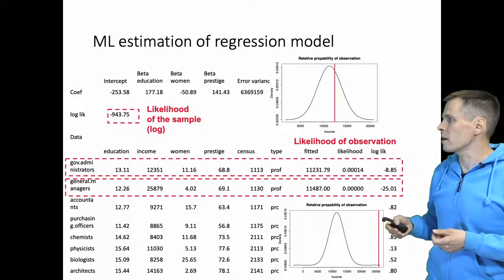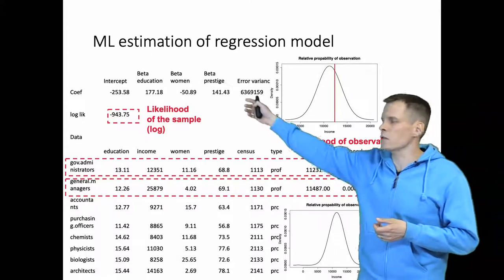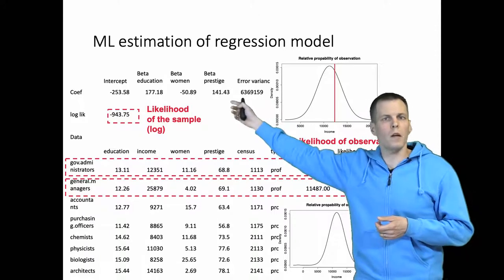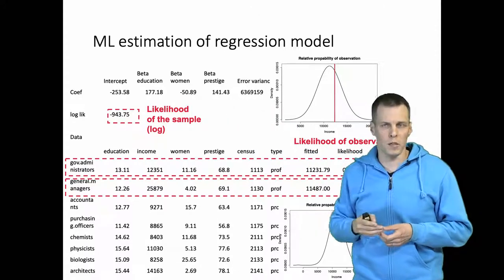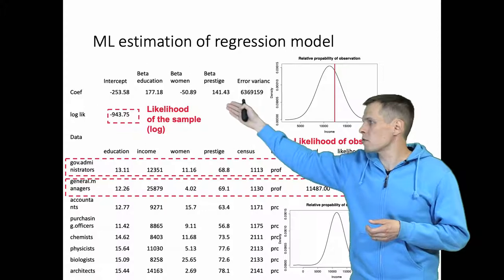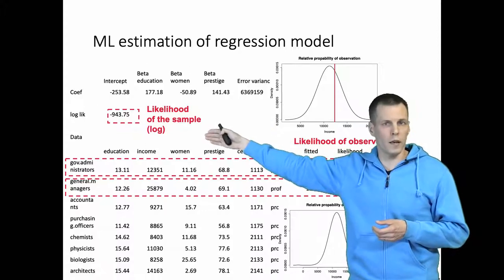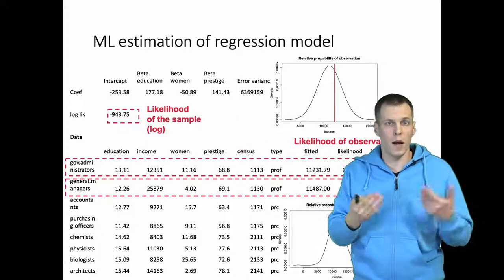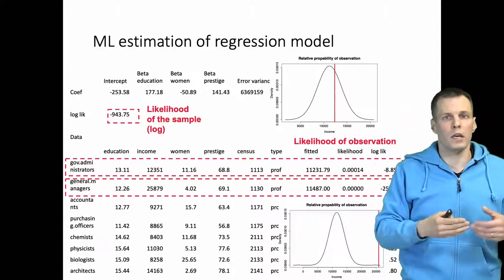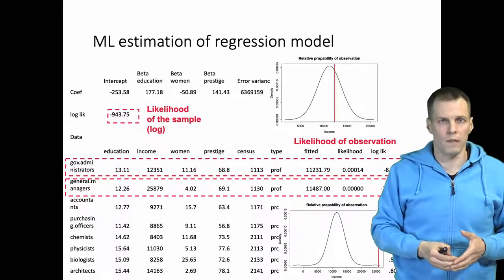How we do the actual estimation is that we have some starting values for the coefficients, and then we tell the optimizer to find the regression coefficients that make this log likelihood as large as possible. In practice it's always negative but gets closer to zero as the model fit improves.